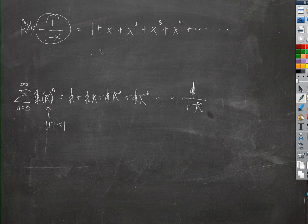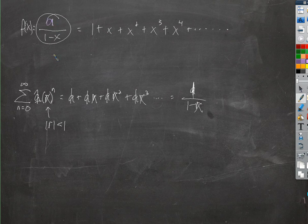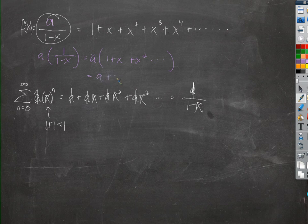And we can change things about it. Like say this was something other than 1, say it was a. Well, then we can just rewrite that as a times 1 over 1 minus x. This much is equal to that, so it would just be equal to a times all of that. And just everything would have an a next to it: a plus ax plus ax squared, and so on and so on.